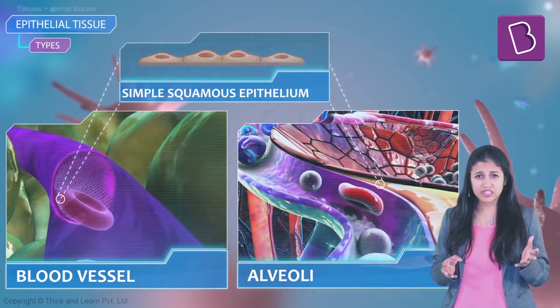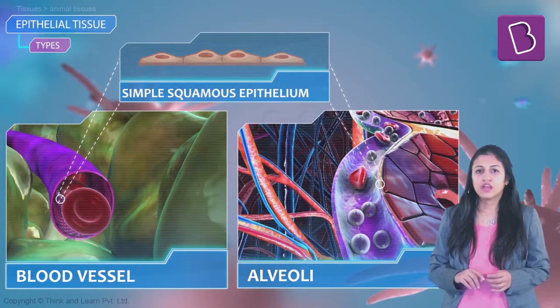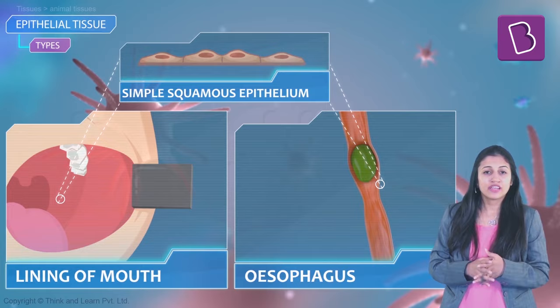Squamous epithelium is found lining blood vessels and lung alveoli, where transportation of substances through a permeable surface is needed — places requiring a very thin barrier. They are also found wherever a delicate lining is needed, such as the esophagus and the lining of the mouth.